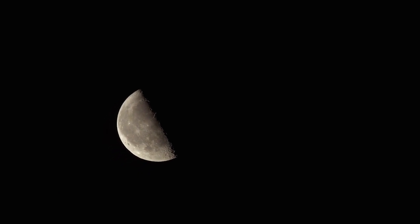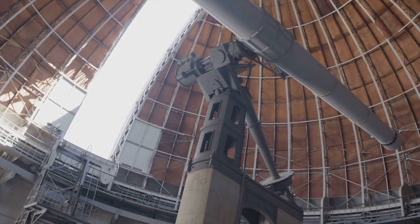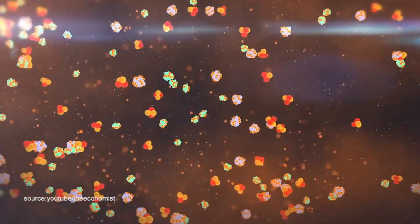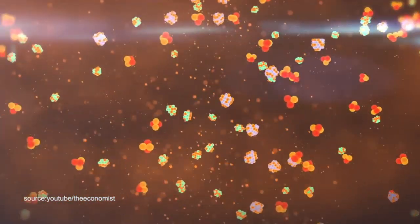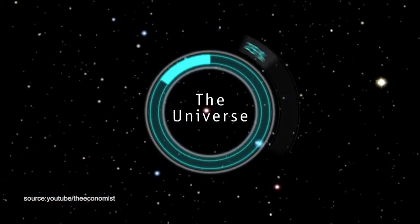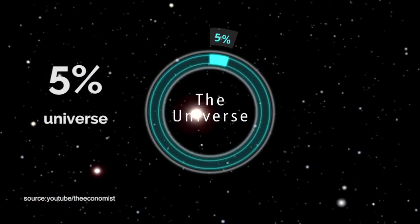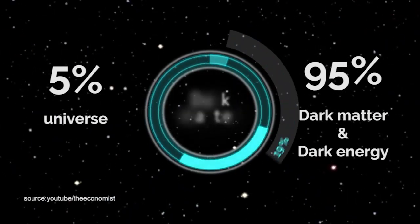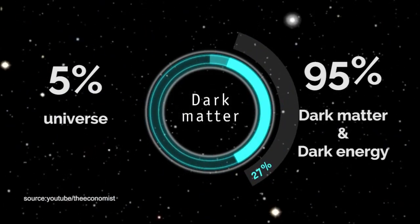Even all that blackness is made of something, and astronomers basically have no idea what that something is. Stars, planets, and everything on them are comprised of atoms. Amazingly, despite how massive some of these structures are, they only make up about 5% of the universe. The other 95% is made up of something completely different, and we're still trying to figure out exactly what it is.